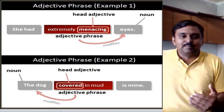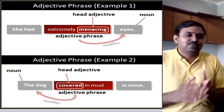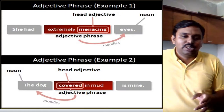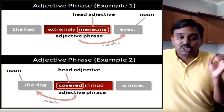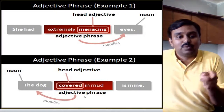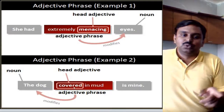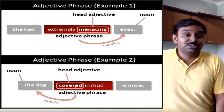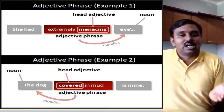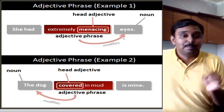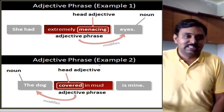Look at the next example: 'The dog covered in mud is mine.' Now if you look at the phrase 'covered in mud' and ask a question, you will get the answer 'the dog.' So 'the dog' is the noun here and the adjective phrase 'covered in mud' is modifying the noun 'the dog.' Remember that the noun can be before the phrase or even after the phrase, but it is describing the noun — that is the major idea to identify an adjective phrase.